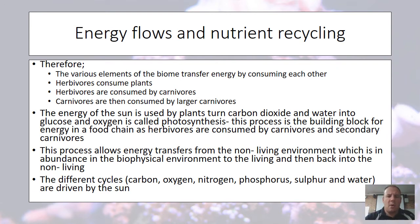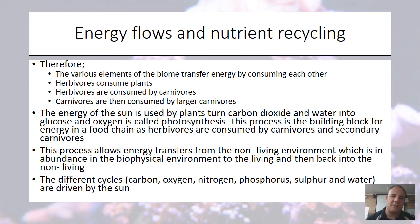Various elements of the biome transfer energy by consuming each other. Herbivores consume plants, herbivores are consumed by carnivores, and carnivores are then consumed by large carnivores. Remember, a herbivore is a vegetarian and a carnivore eats meat. The energy of the sun is captured by plants, which turn carbon dioxide and water into glucose and oxygen — that's called photosynthesis. This process is the building block of energy in a food chain, as herbivores are consumed by carnivores and secondary carnivores and so on.